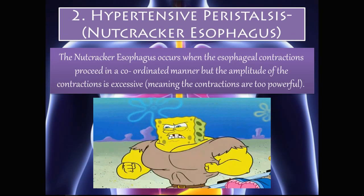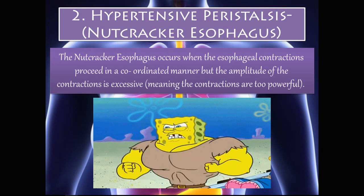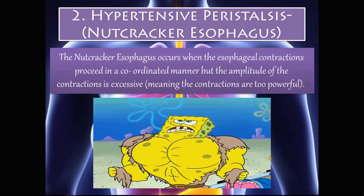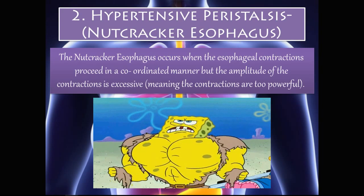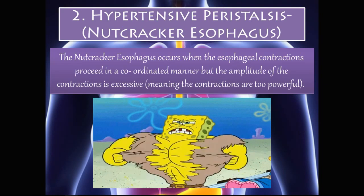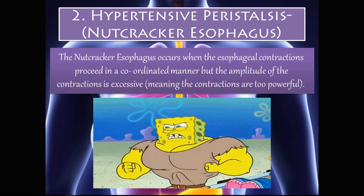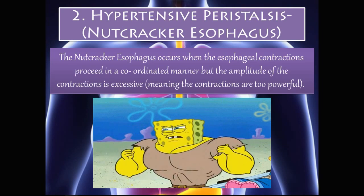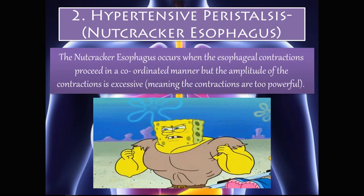The nutcracker esophagus, or hypertensive peristalsis, occurs when esophageal contractions proceed in a coordinated manner but the amplitude of the contractions is excessive — meaning the contractions are too powerful. The contractions are coordinated, which is normal, but their force is too great compared to normal peristalsis.